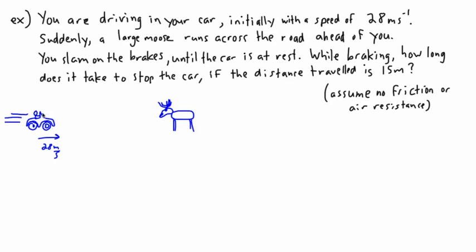Let's assume then you see this thing, you go holy bleep, there's a moose, so you slam on the brakes and you travel a certain distance before you stop. We're going to assume that you travel a distance of 15 meters and you stop just in front of this lovely moose here. Now that we've gone from the words to the situation here, the question is then how long does it take to stop the car?